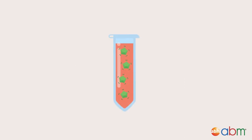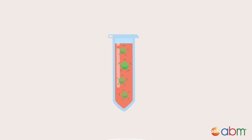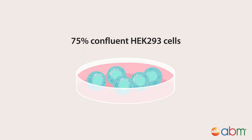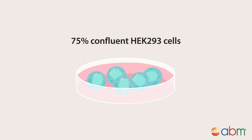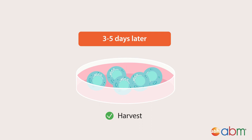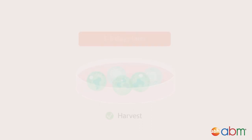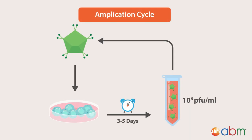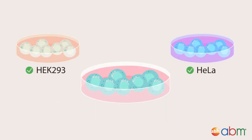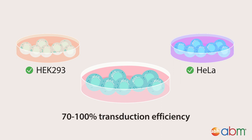Store your seed stock at minus 80 degrees Celsius until needed. With your seed stock, you can easily make high titer virus stocks. Simply infect a fresh batch of 75% confluent HEK-293 cells with the seed stock and harvest approximately 3 to 5 days later after cytopathicity has been observed. In general, up to 2 to 3 rounds of amplification will yield a titer of 1 million plaque forming units per ml from HEK-293 supernatant. This is enough for the transduction of most target cells in vitro at 70 to 100% efficiency.